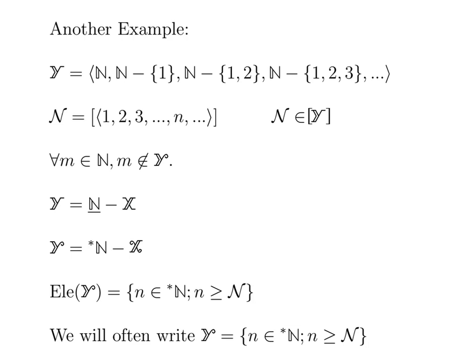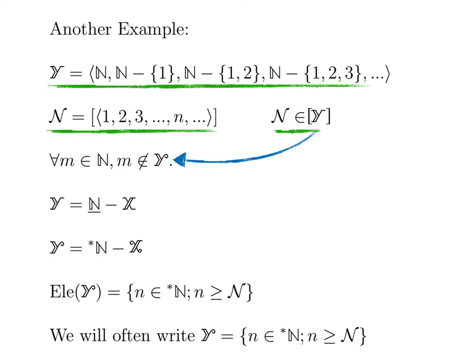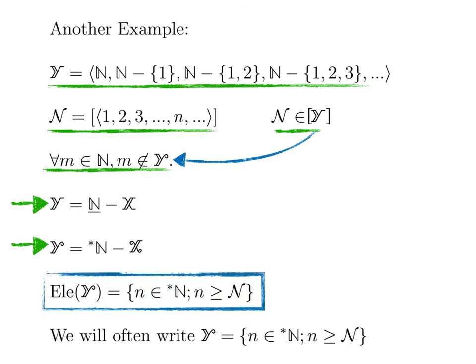Another example is built from the sequence big Y. We see that the hypernatural number N belongs to the equivalence class of Y, which we write curly Y. We can easily see that none of the natural numbers belong to this hyper-set. The hyper-set curly Y is given by star N from which we remove the elements of hyper-set curly X, and the listing of the elements in curly Y is given by all hypernatural numbers greater than or equal to N.